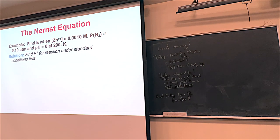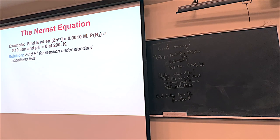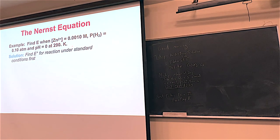Here's an example actually using the Nernst equation. We've got zinc 2+, hydrogen gas, and a pH of 0. pH of 0 means H+ concentration is 10^0 = 1 M. We have H+, H2, and zinc 2+, with a temperature of 290 Kelvin. We want to find the cell potential E. First, find E° under standard conditions: assume zinc 2+ is 1 M, temperature is 298 K, and gas pressure is 1 atm. Using the cell potentials from problem set 5: zinc to zinc 2+ gives +0.76 V, and the standard hydrogen electrode is 0 V, so E° = +0.76 V.